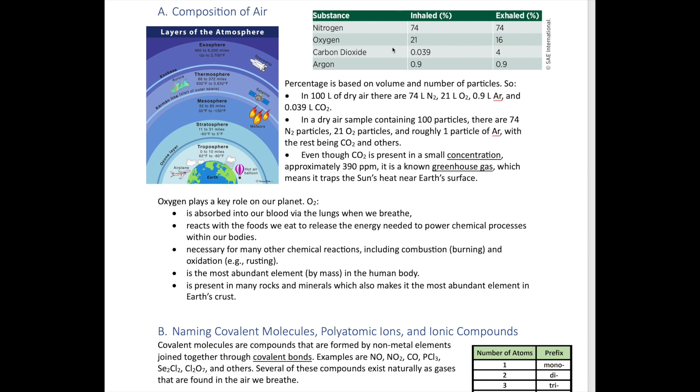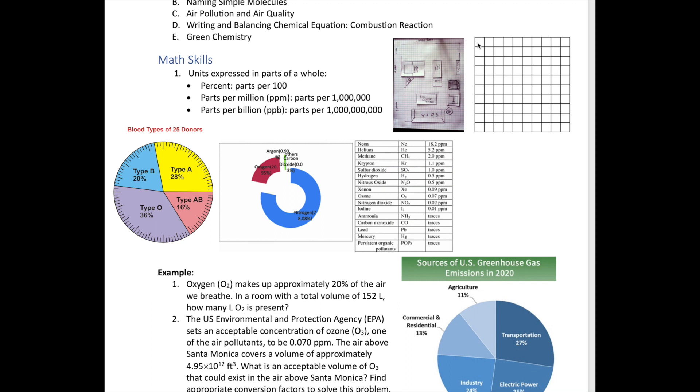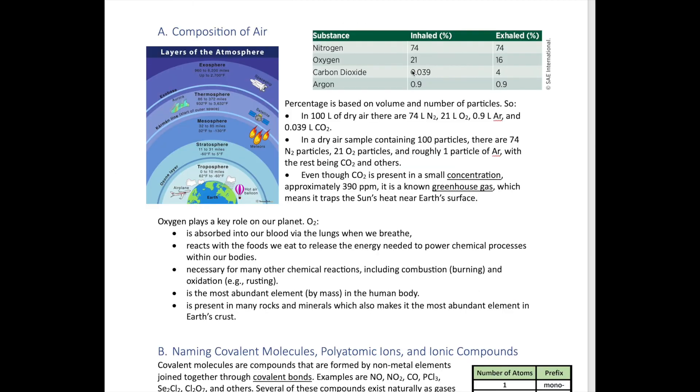The percentage here is percentage by volume, which just means that if you have 100 liters of air, 74% of that is nitrogen, so it's 74 liters. Another way to think about this is if you imagine there's 100 particles of air, there's 74% nitrogen, that means that 74 of these particles is going to be filled with nitrogen particles. Now, CO2 is a small quantity, but it's actually what we call a greenhouse gas and will trap the sun's heat near the Earth's surface, and that causes problems. It heats up the Earth more than what we would like it to be in natural processes.